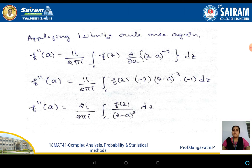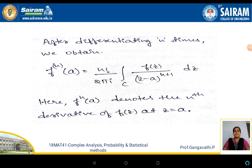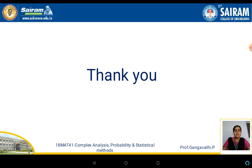On applying the Leibniz rule again for the second differentiation, we get f double dash of a equal to 2 factorial by 2 pi i, integral over c of f of z by z minus a to the power 3, dz. Continuing and differentiating n number of times, we get the nth derivative f n of a equal to n factorial by 2 pi i, integral over c of f of z by z minus a to the power of n plus 1, dz. This is the generalized Cauchy integral formula, and both the particular and generalized formulas can be used as required by the problem.